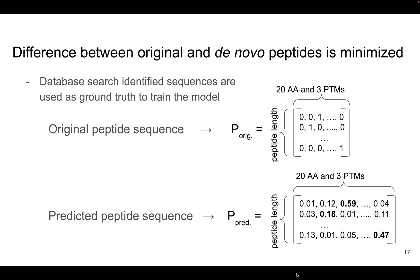To train our model, we rely on peptide sequences obtained from database search, and those sequences are treated as ground truth labels. For each position along the peptide, Casanova outputs probability scores for 20 canonical amino acids as well as three post-translational modifications. During training, the scores corresponding to the correct amino acids are maximized, while the scores corresponding to other amino acids are minimized.